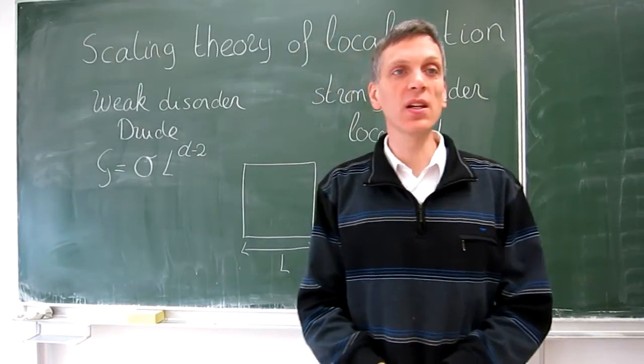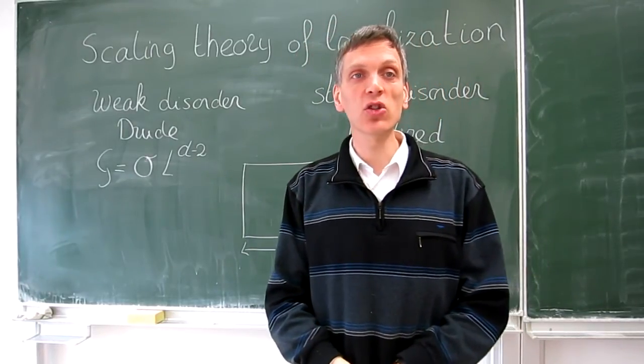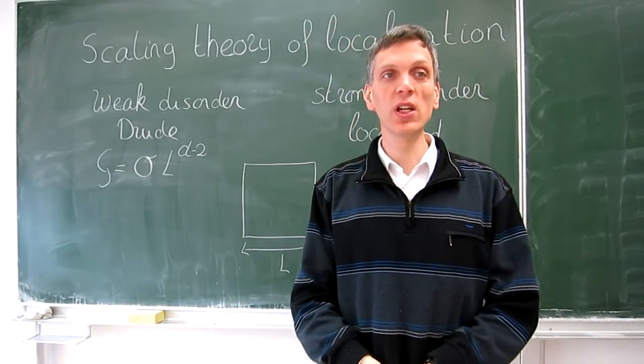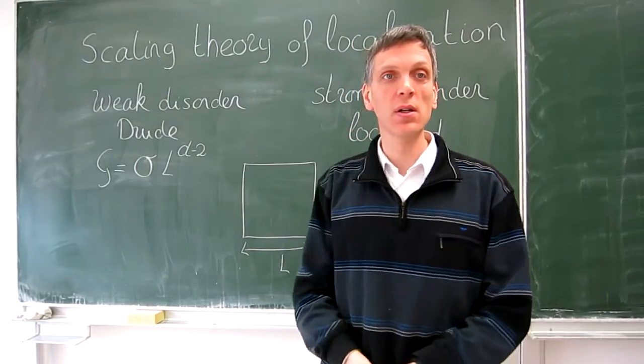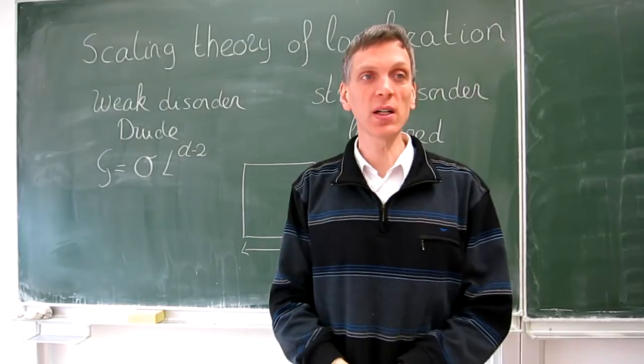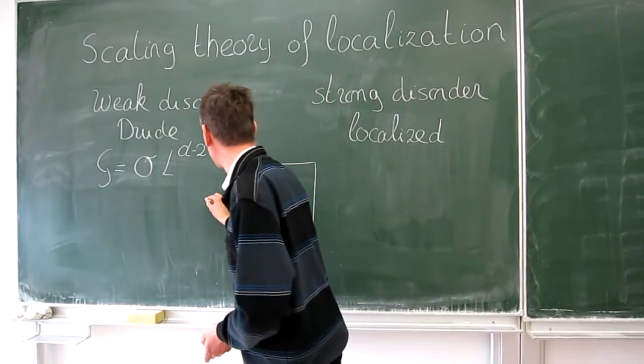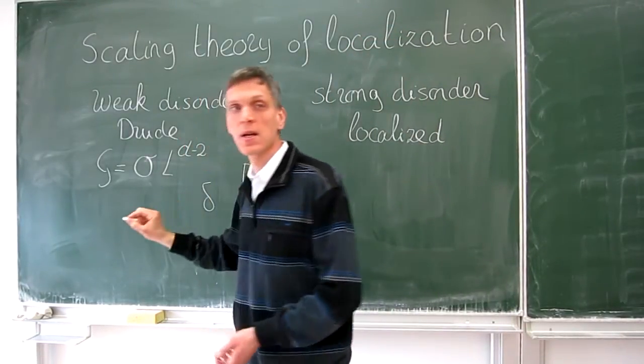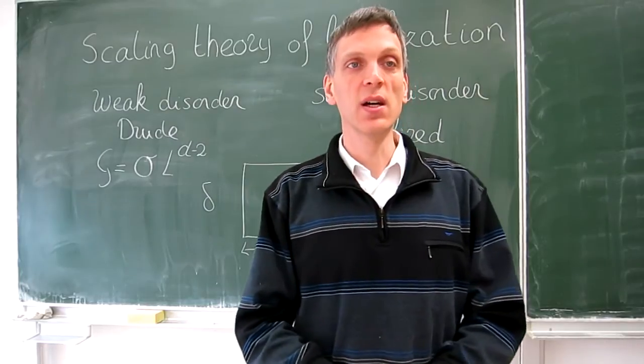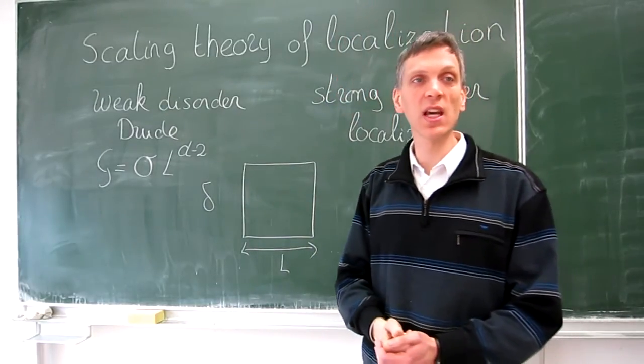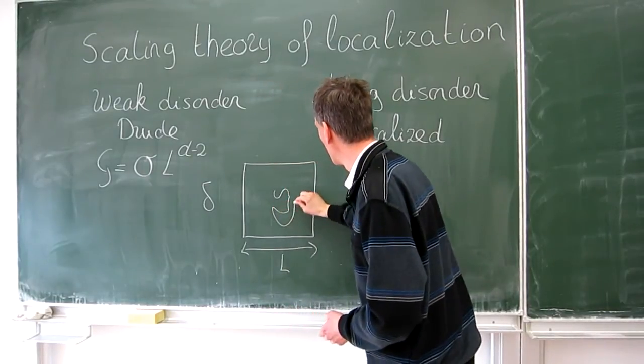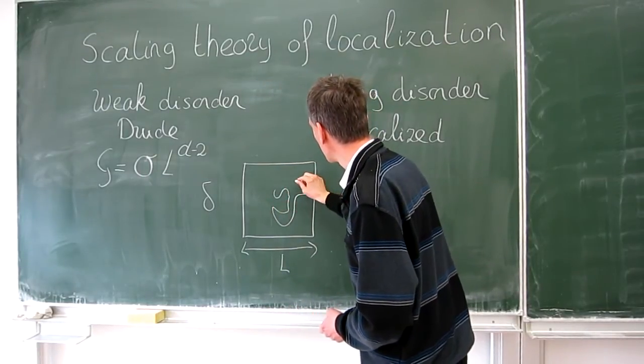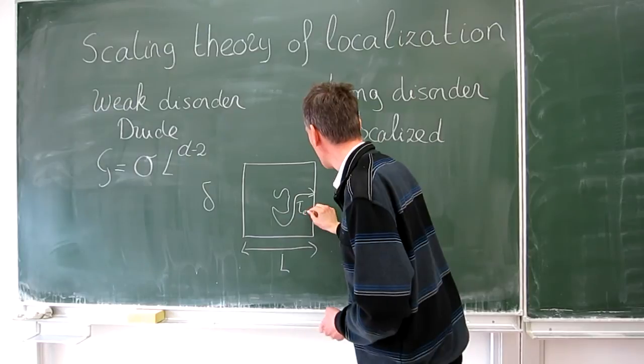The first important ingredient of the scaling theory is an essential relation between the conductance g and two energy scales characteristic of a block. The mean spacing, delta, between energy levels and the Thouless energy, the inverse of the time tau escape until an electron somewhere inside this block will have reached the boundary and escape.